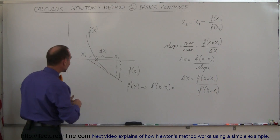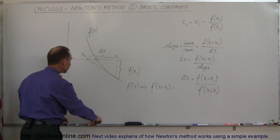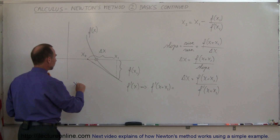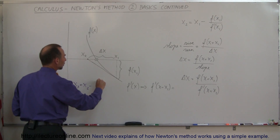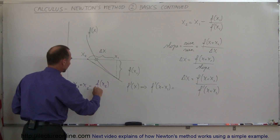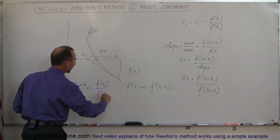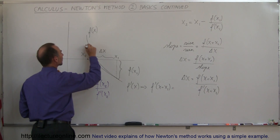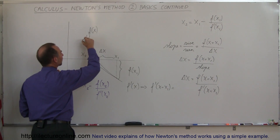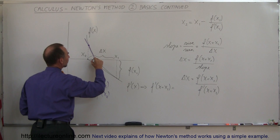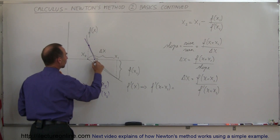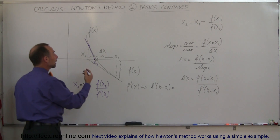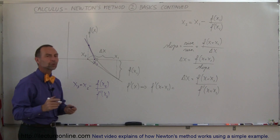So what happens now? You've found the second point closer to your root, and you do the same thing again: x₃ is equal to x₂ minus f(x₂) divided by f'(x₂). The function evaluated at x₂ gives you a new point, the slope at that point gives you a new tangent line, and that yields x₃, which is again much closer to the root. If you keep doing this, eventually you get closer and closer to the actual root of the function.